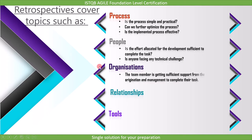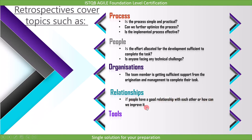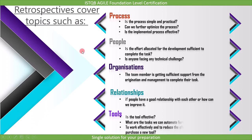For organizations, we can ask if team members are getting sufficient support from the organization and management to complete their tasks. For relationships, we can ask open questions about whether people have a good relationship with each other and how we can improve it. For tools, we can discuss the tools used during the iteration — is the tool effective, what tasks can we automate further, and do we need to purchase a new tool to work more effectively and reduce effort?